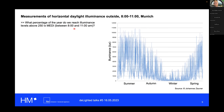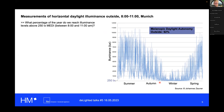I also narrowed the time of day down to the morning from 8 when work starts until 11 o'clock, because we often design for work contexts and those first hours are very important for synchronization. For the outside this question is relatively simple to answer. Looking at measurements for Munich for one year, we have values from zero up to over 100,000 lux. The answer to our question is not 100% for the outside, but it's quite high — 92%. This is what I call melanopic daylight autonomy.